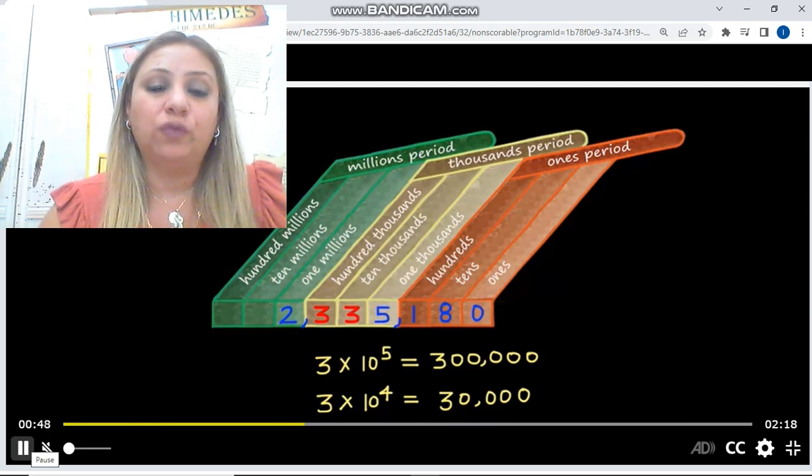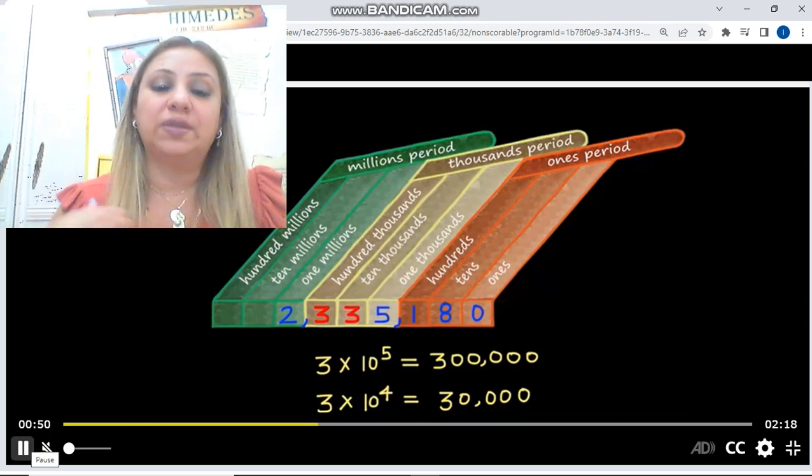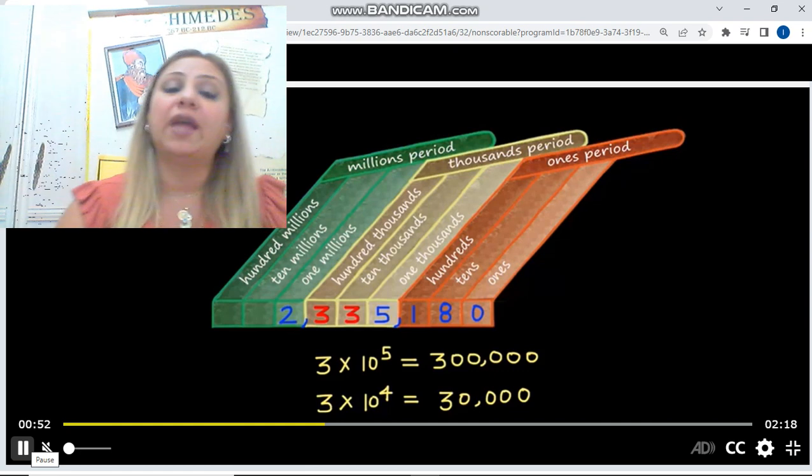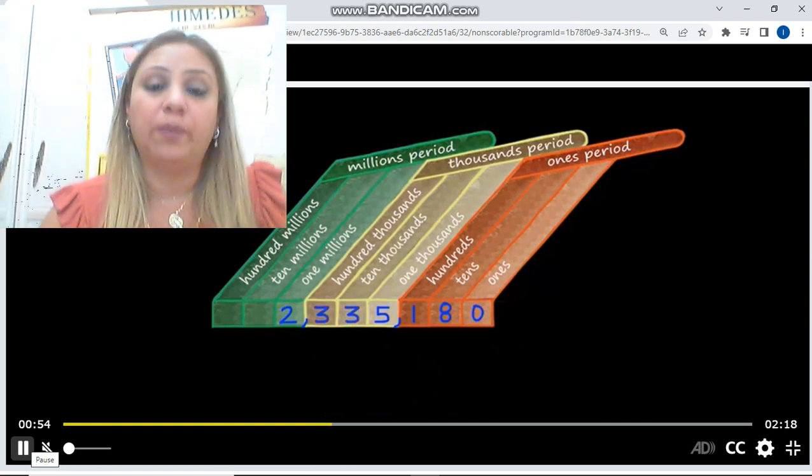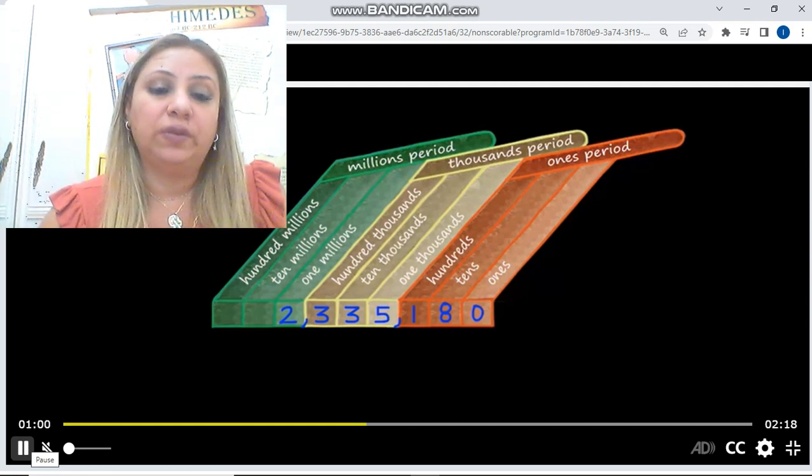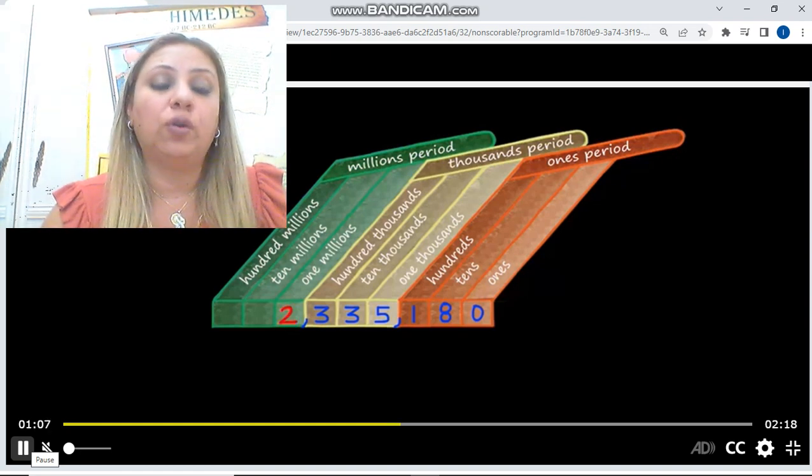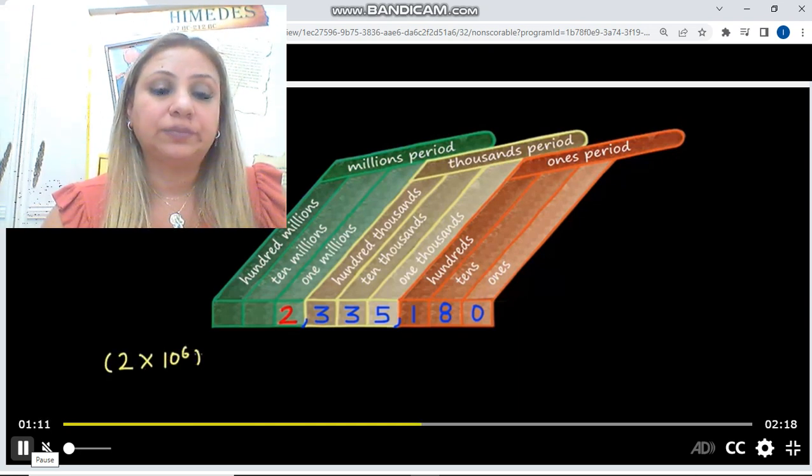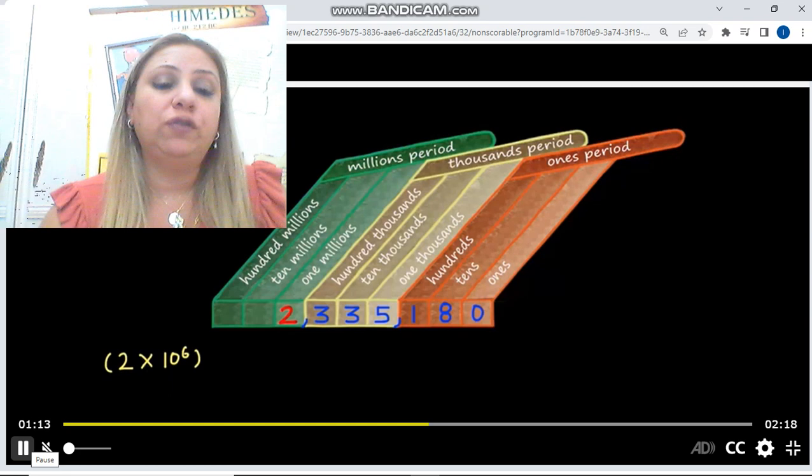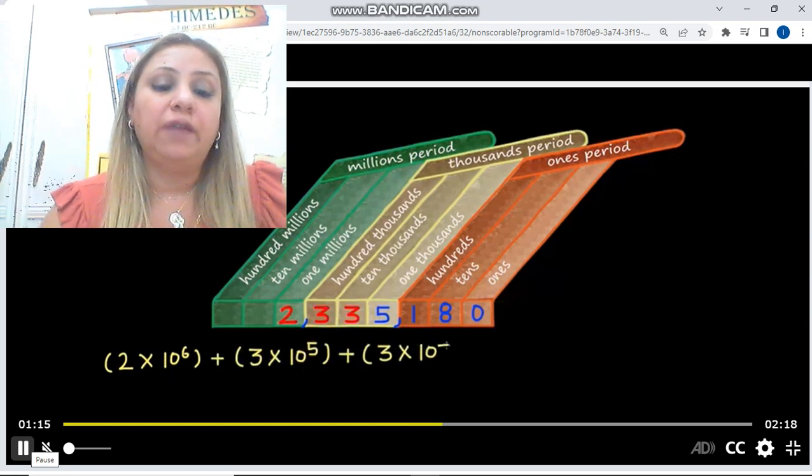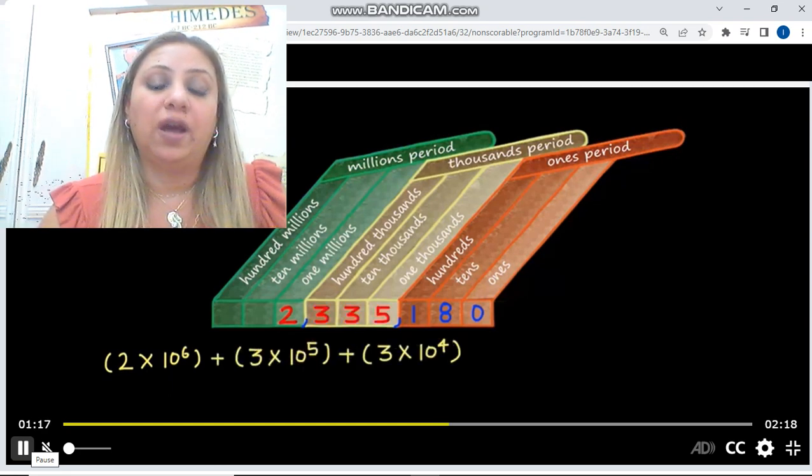Now, let's move on. As you see, we can use the place value chart to write the expanded form of this large number using the powers of 10. Let's begin with the two, which is in the millions place. If you multiply the two by one million or by 10 to the sixth power, that will give you the value of the two. If you add each value to the other, that will give you the expanded form of the number.